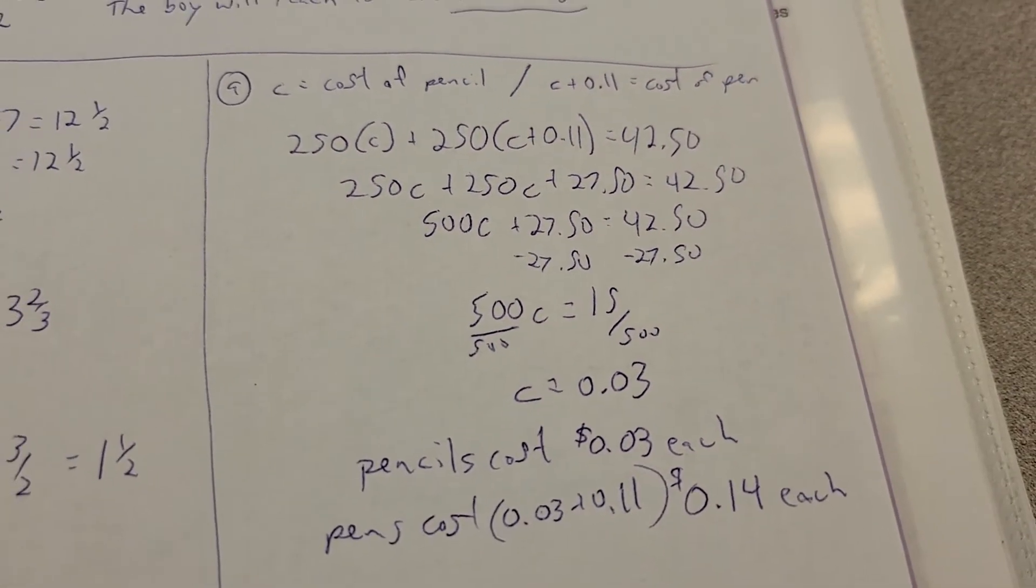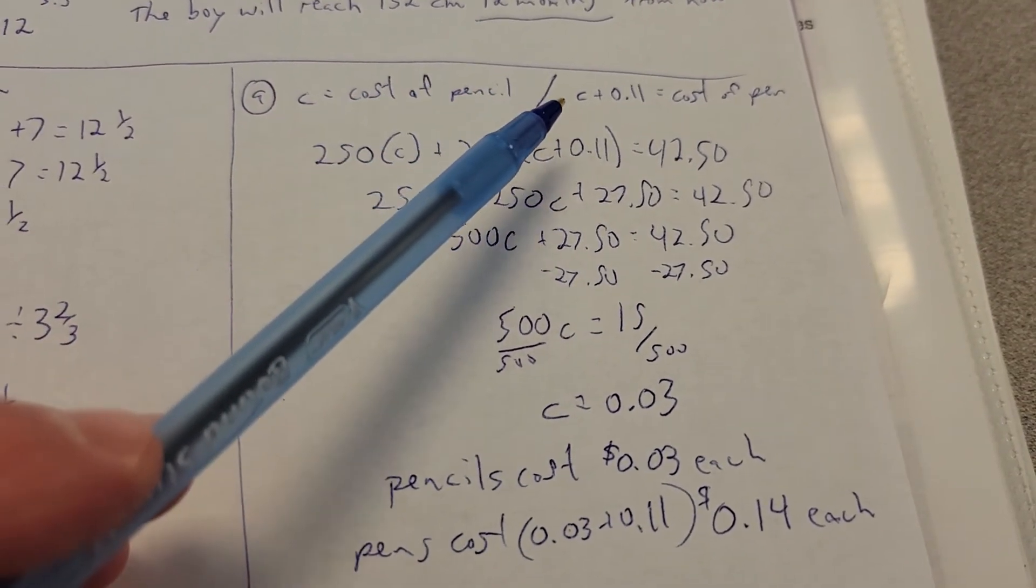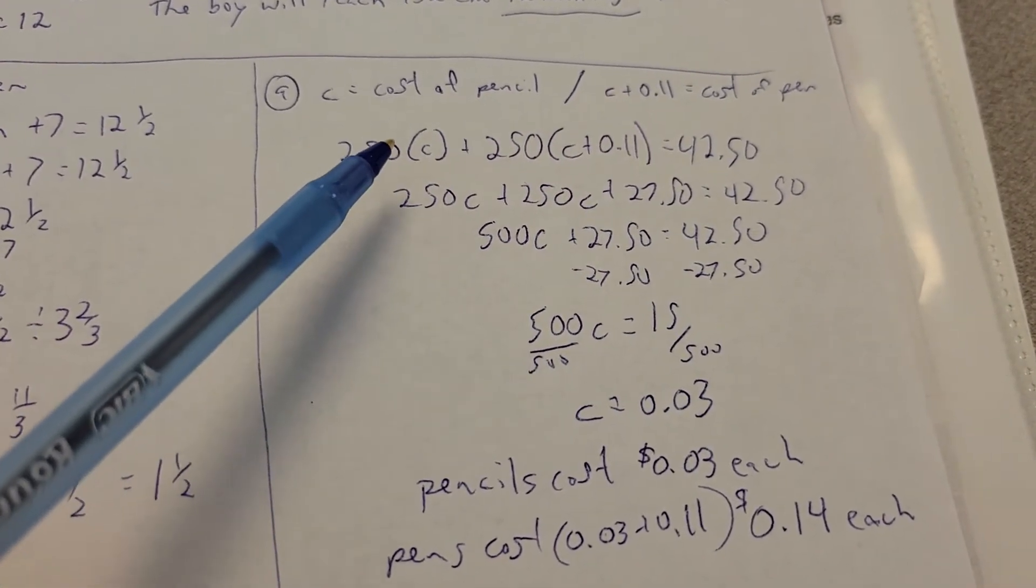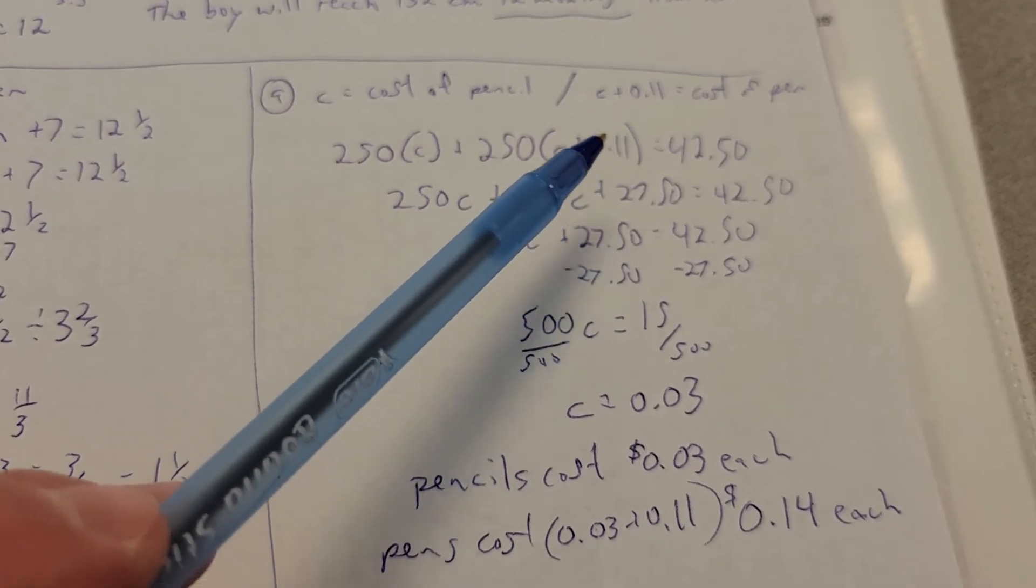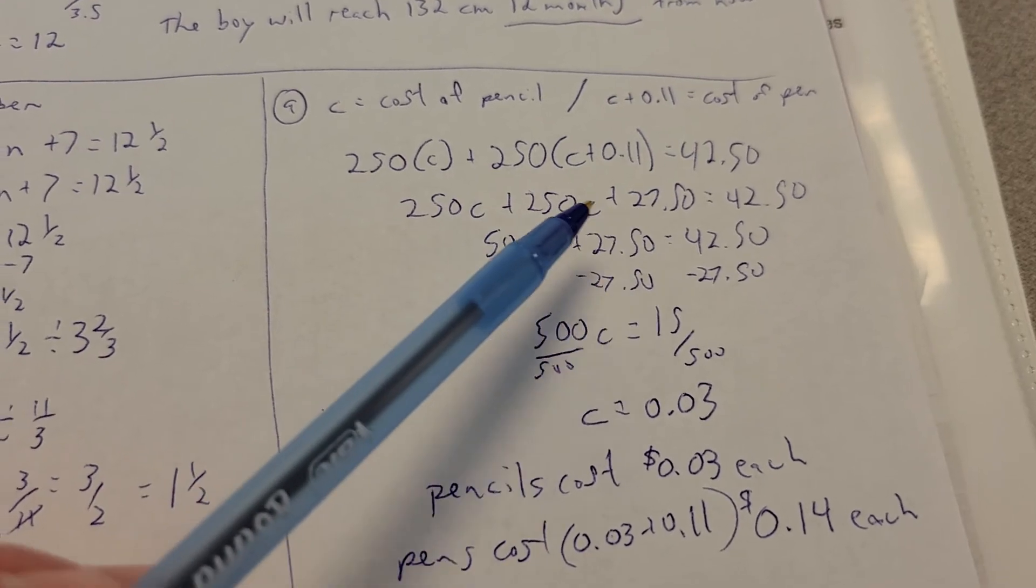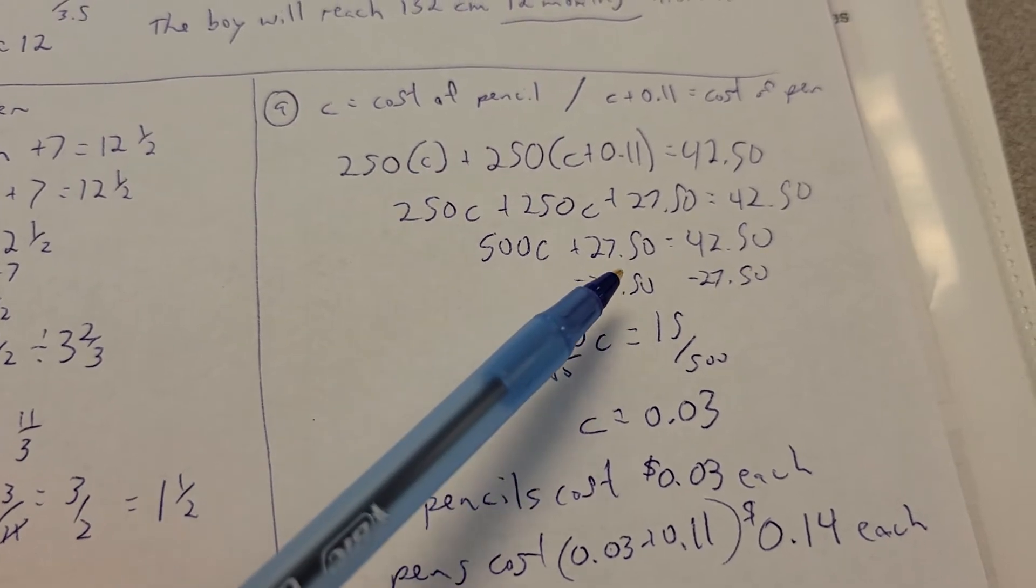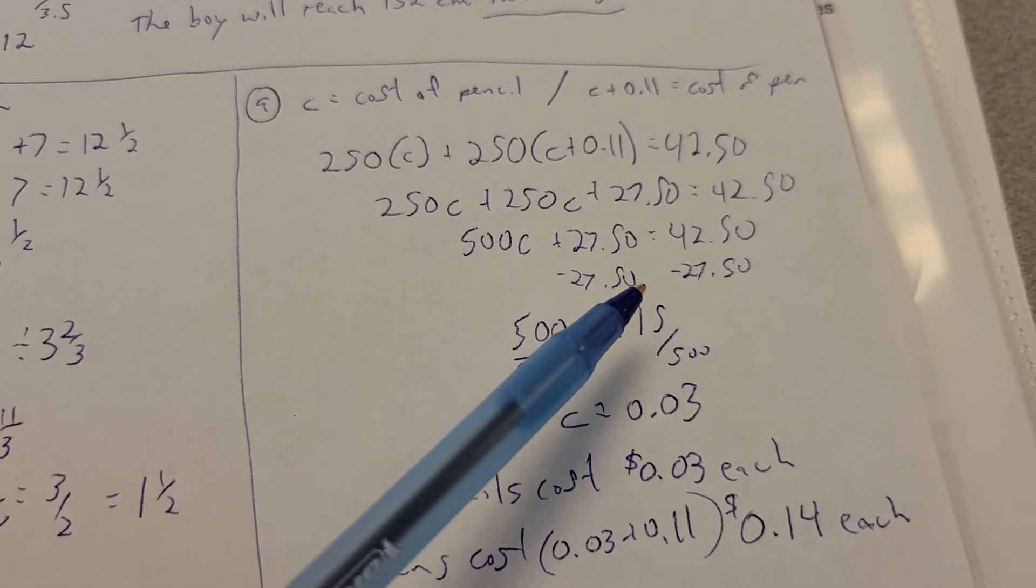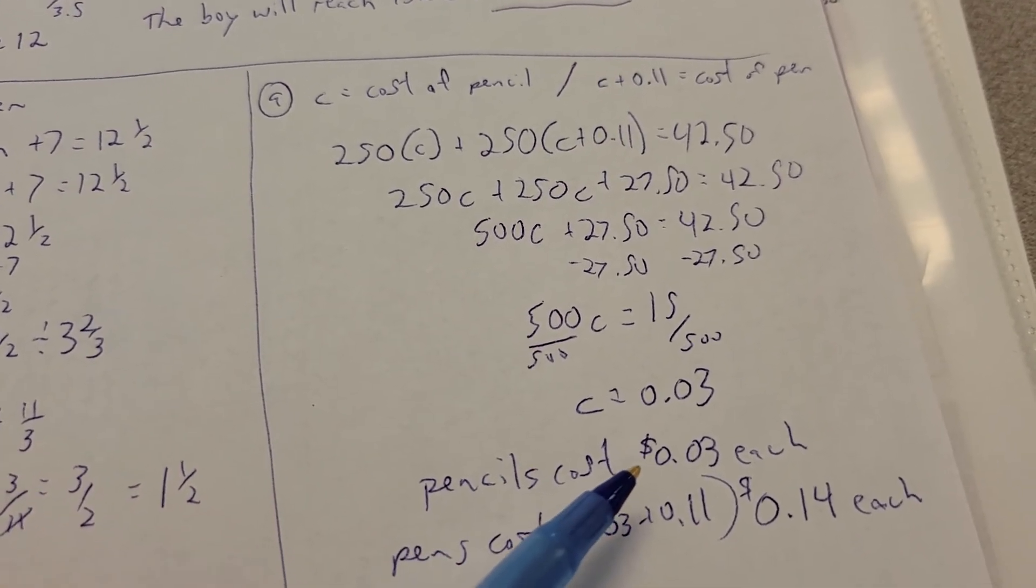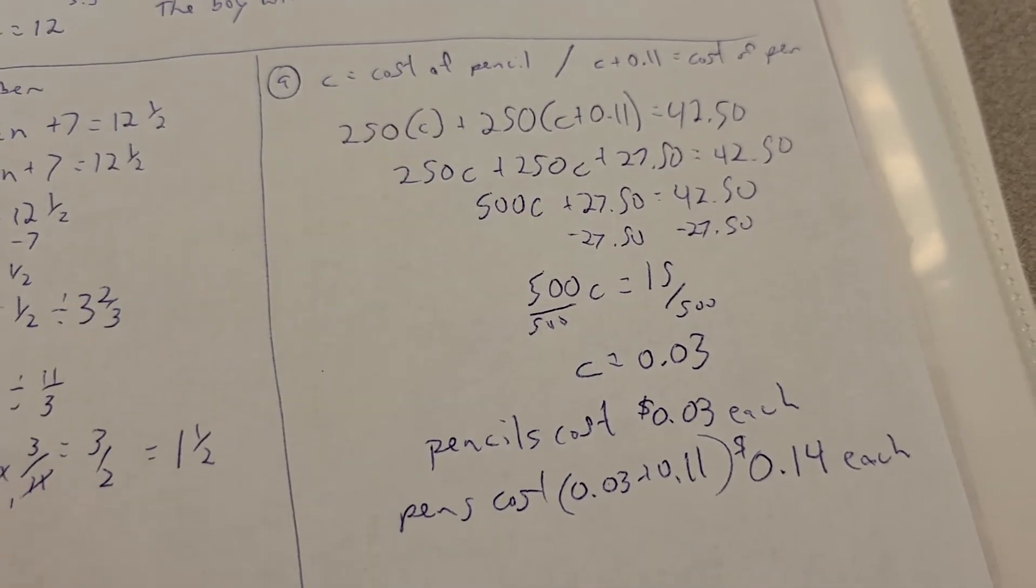Alright, and then number 9, probably the biggest thing as you're setting this up is C is going to stand for the cost of the pencil, and then the pens are more. They're the cost of the pencil and 11 cents more. So, the number you need is 250 of those, and 250 of the pens to get that. So, you have to do a little bit of multiplication here, some distributive work here in that scenario to figure out all the pen costs. And then you can add those together. You get the 500C, and you still have the 27.50, get rid of that. And you get 500C equals 15, divide it, and you get 3 cents. So, each pencil costs 3 cents, but don't forget, the pens were 11 cents more. So, you have to take 3 cents plus 11 to get the 14 cents.